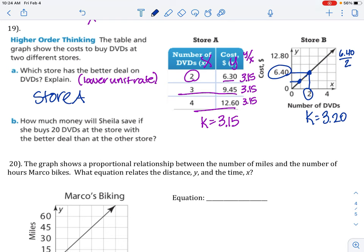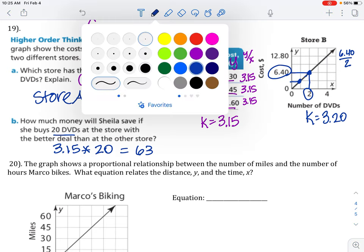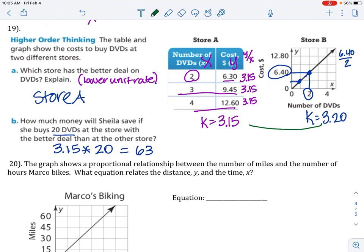B, how much money will Sheila save if she buys 20 DVDs at the store with the better deal? So, what you're doing is you're taking the unit rate from store A and multiplying it by 20. When you do that, you see that you are spending $63 there. But how much money will she save? This store is $0.05 less per DVD than store B. So, $0.05 times 20 would be $1. So, she actually is saving $1 by going to store A.